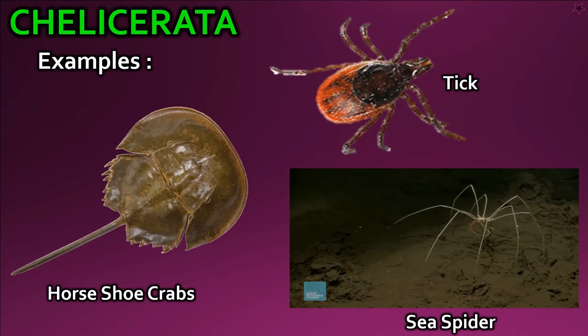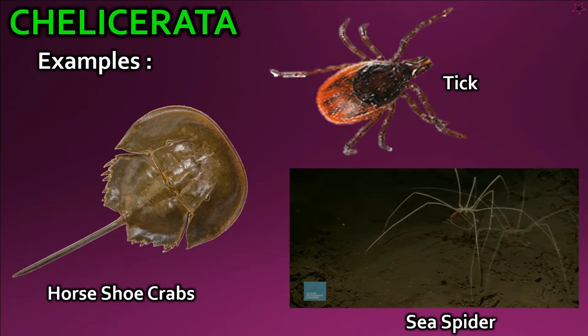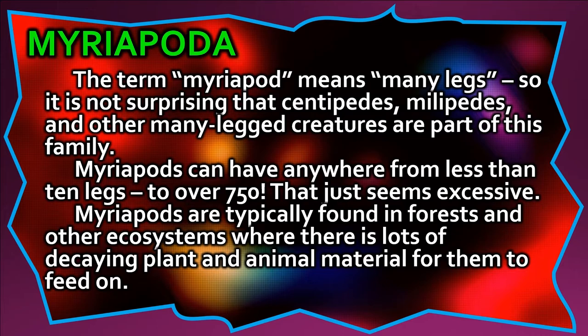The term 'myriapod' means many legs, so it is not surprising that centipedes, millipedes, and other many-legged creatures are part of this family. Myriapods can have anywhere from less than 10 legs to over 750 — that just seems excessive. Myriapods are typically found in forests and other ecosystems where there is lots of decaying plant and animal material for them to feed on.